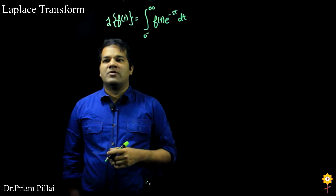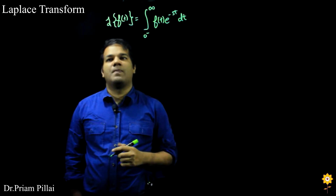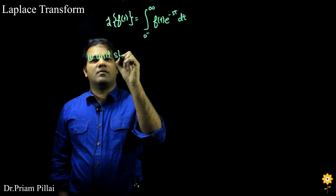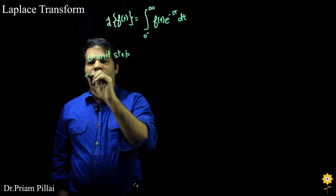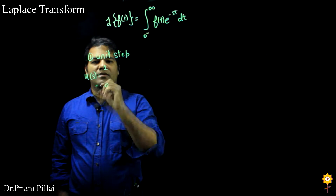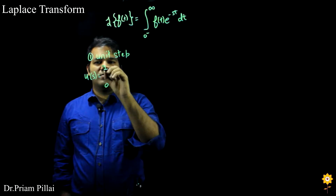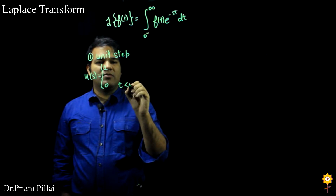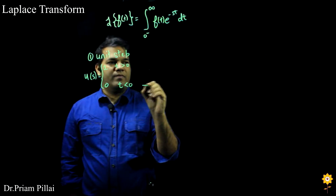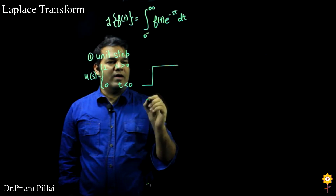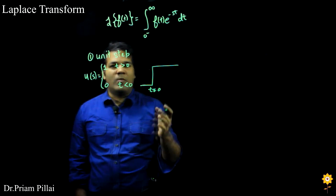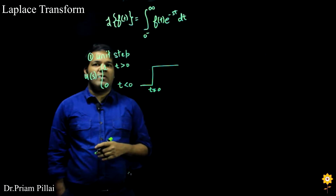Let's look at what happens when we plug in different types of functions of f of t. The first function we'll try is a unit step. The unit step u of t would be 0 for t less than 0 and 1 for t greater than 0. This is a very common function that we would normally associate with control systems.